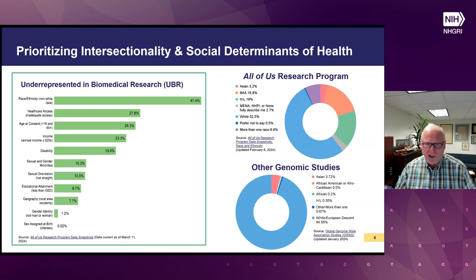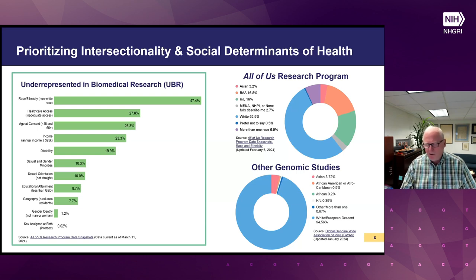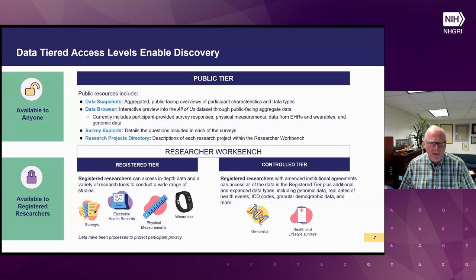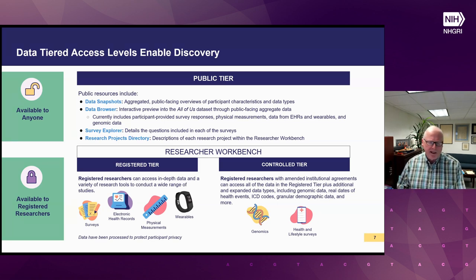On the one hand, there are challenges with what is the population of inference since it's certainly not a random sample. On the other hand, it's not strictly a convenience sample, since one can try to construct weights to make inferences about the U.S. population, although it's difficult. The data is available in a tiered manner: mostly aggregated summary statistics in a public-related tier, and raw data including genomics and health-related data in a registered or controlled tier, available on what they call the researcher workbench.